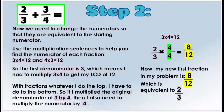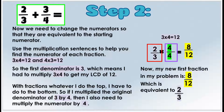In step two, we need to change the numerators to make them equivalent to the starting numerator. We're going to use the multiplication sentences to help us find the numerator of each fraction — those two sentences were three times four equals 12 and four times three equals 12. Let's start with the first fraction: the first denominator is three, which means I had to multiply three times four to get my LCD of 12.